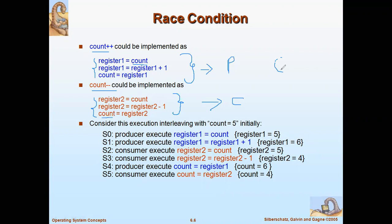The producer is one process and the consumer is another. They share the variable count — so this is the critical section of the producer code and this is the critical section of the consumer code, and their critical sections share the variable count. Let's say initially the value assigned to count is five.